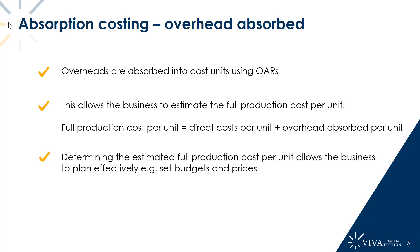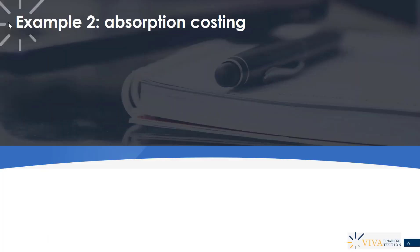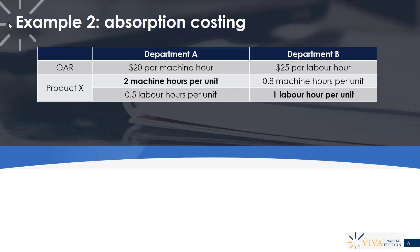Once we've got an estimated full production cost at the start of the period, we then have the ability to plan effectively. We can do things like set our prices — once we understand what the full production cost is, we know our price needs to be higher than that to make money. It also allows us to set our budgets, which are very important for the planning cycle of the business. Let's continue our previous example and see how overheads will be absorbed using the overhead absorption rates we calculated previously.